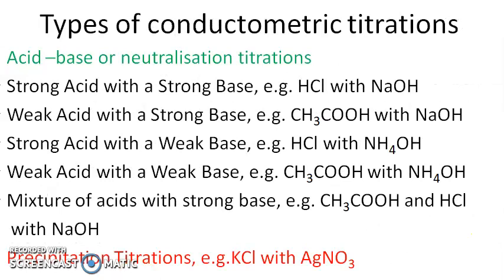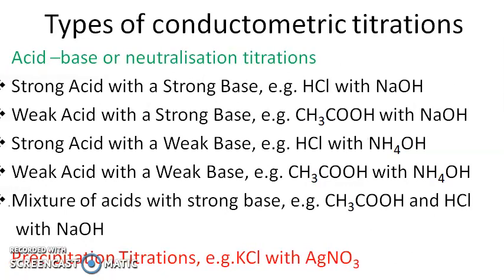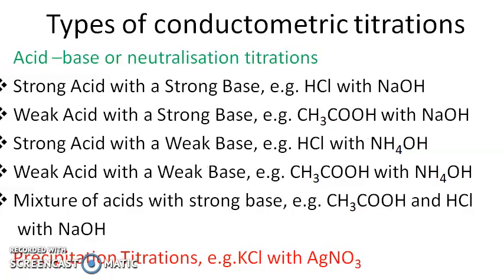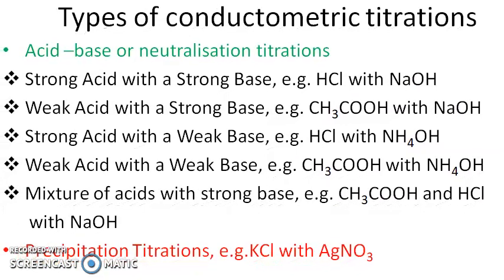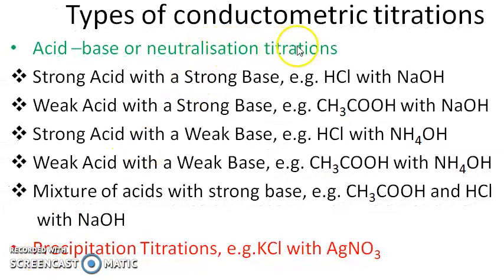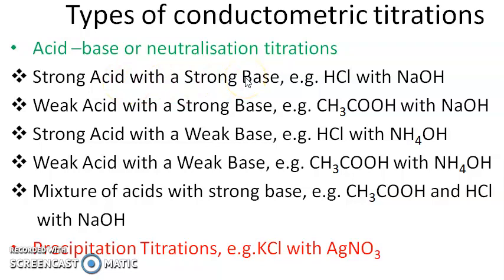There are different types of conductometric titrations. We will be discussing two types: acid-base or neutralization titrations, and precipitation titrations. Neutralization titrations are of different types depending upon the type of acid and base — for example, titration between a strong acid and strong base like HCl and NaOH.